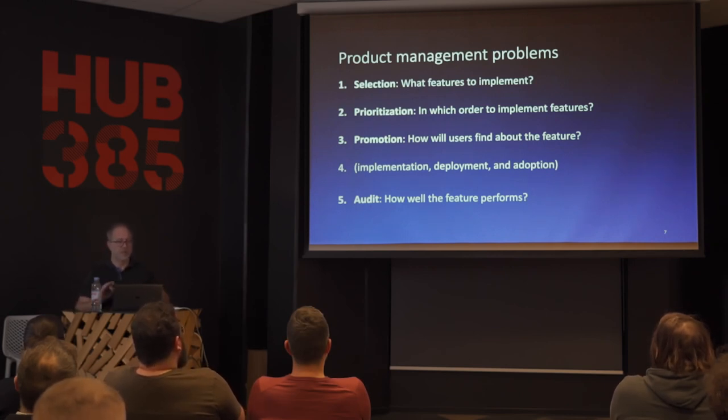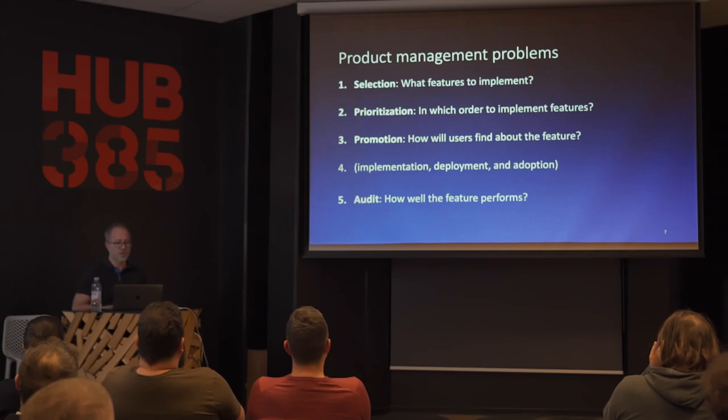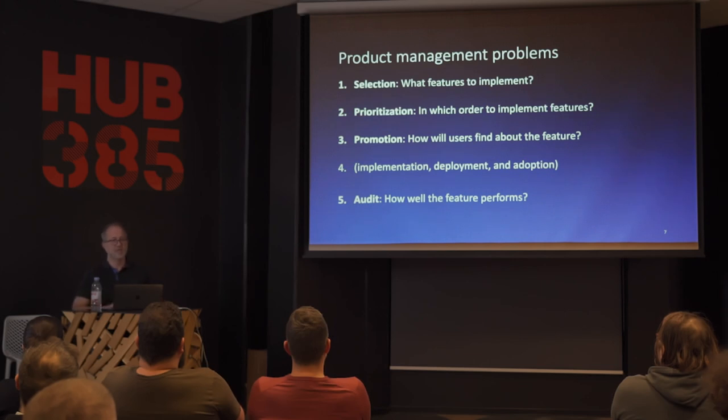As step four, once we've decided on selecting features, the order they go, and how we're going to promote them, comes the magical part: we give the feature description to our technical team. They do the technical magic, implement it, deploy it, and release to happy customers who then ideally adopt the feature. But the task is not done, because a few months after that, we should go and check if the feature actually works as intended — did people discover it and are they using it the way we wanted?